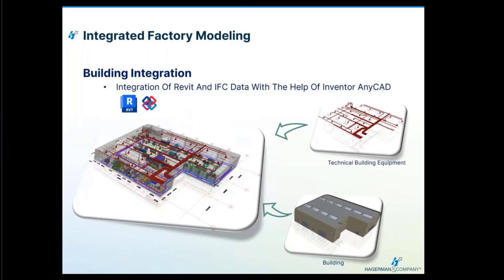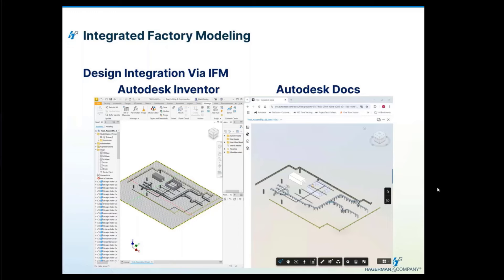From the Revit side, we can bring Revit files into Inventor and place those using Inventor AnyCAD. We can bring in IFC data with Inventor 2025 and export those out to share with the architectural world. On the Autodesk Docs side — where we collaborate and store our files — I've got an Inventor layout using factory design utilities with a control room, conveyor runs, ductwork, a drying booth, catwalk, safety fence, and guardrails, seen as a live look inside Docs.